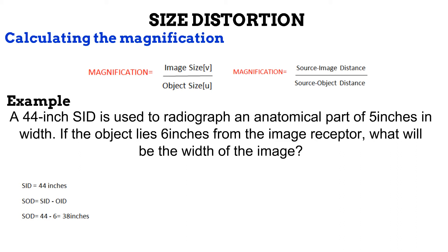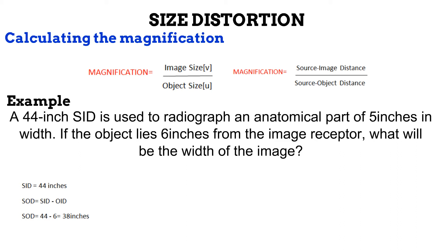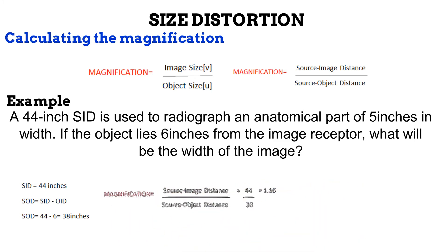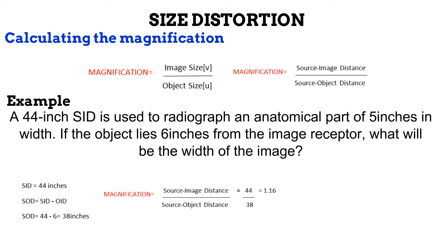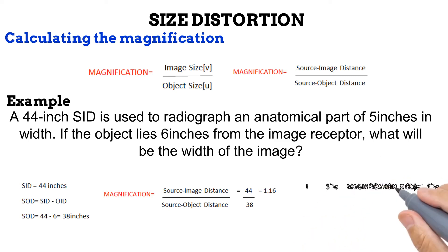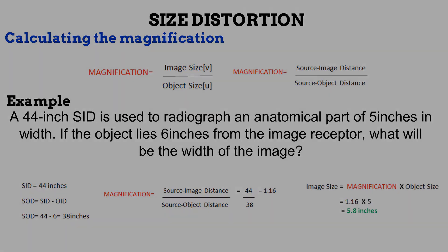The next step is to get the magnification factor, which you get by taking the SID and dividing it by the SOD you just found. 44 inches of SID divided by 38 inches of SOD gives you 1.16. Now that you have your magnification factor of 1.16, you multiply that by the object size, which was 5 inches, and that gives you an answer of 5.8 inches, which is the width of the image.